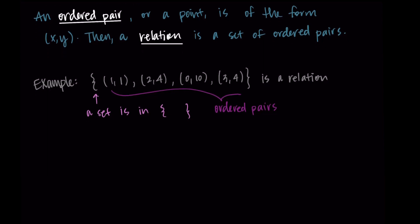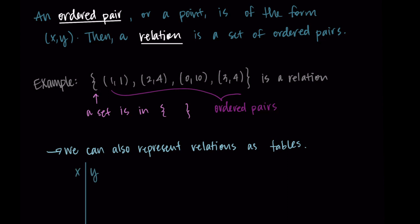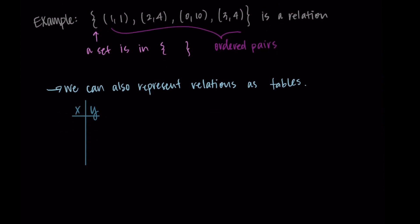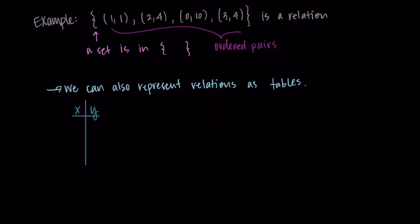We can make this easier to look at by representing it with a table. We'll also be able to represent relations with graphing, but for now we're just going to look at the table. I typically do x in one column and y in the other column, putting the x part of the ordered pair in the first column and the y part in the second column. So we have 1,1; 2,4; 0,10; and 3,4 - just rewriting those points from our relation.